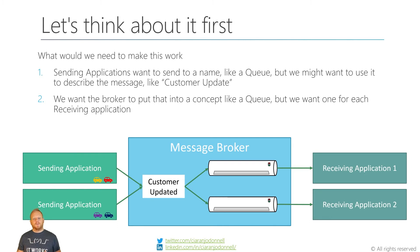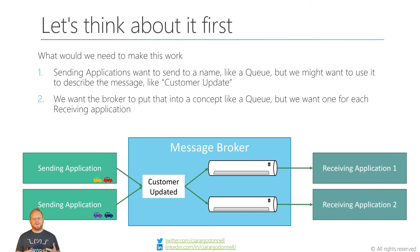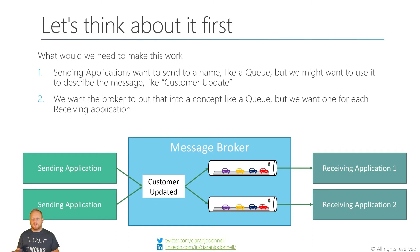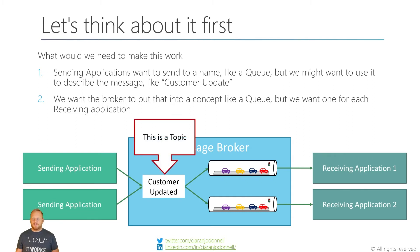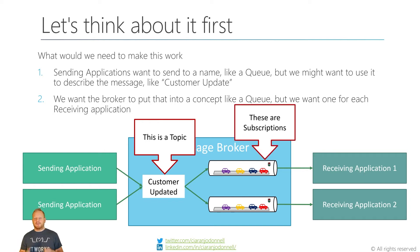This is what topics and subscriptions are here to solve — having more than one application receive the whole set of messages. What we'd want is the sending application to still be able to use a name like a queue — maybe something like 'customer update' — and then the broker puts that into a concept like a queue, but one for every application. The broker is duplicating those messages and writing them to separate queues for us. That name you send to is what we call a topic, and those different queues the messages end up in are called subscriptions.